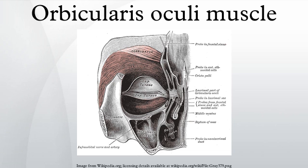The frontalis muscle, which runs from the upper forehead halfway between the coronal suture and the top edge of the orbit, attaches to the eyebrow's skin. Since it pulls the eyebrows upward, it is the antagonist of the orbicularis oculi. It is used in looking up, and increasing vision if there is insufficient light or when objects are far away.